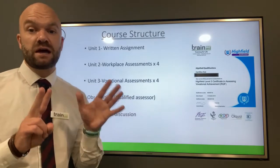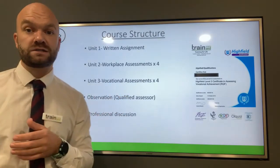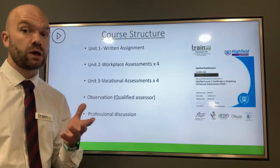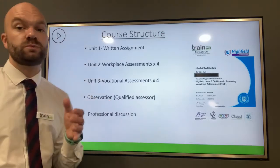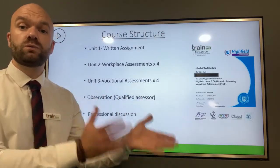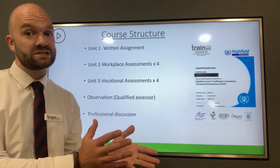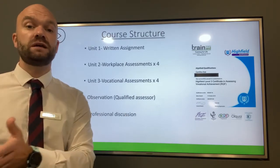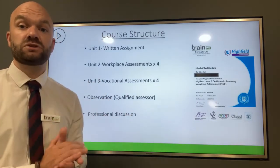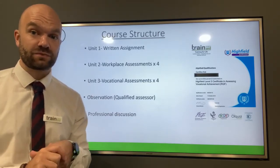Once seven assessments out of the eight have been signed off, you move on to your final assessment. This can be workplace or vocational, and this is going to be observed by a qualified assessor. This could be someone within your organisation if you do have access to a qualified assessor, or alternatively you can video record your assessment and send it into the Train Aid team to review your final assessment.